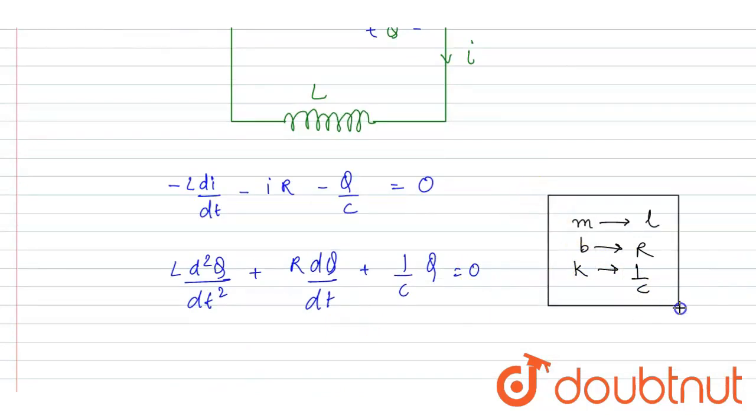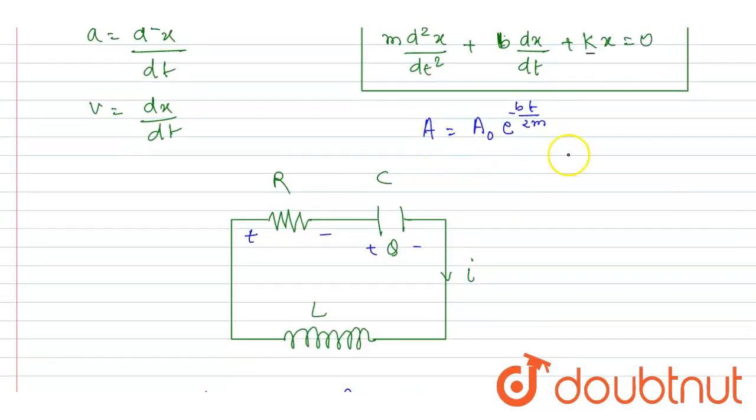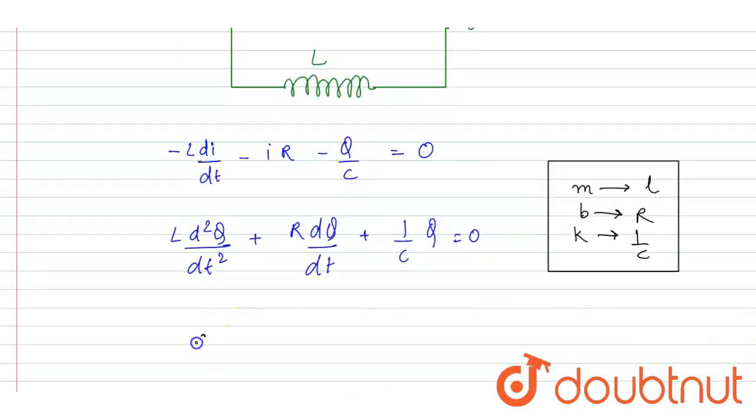Now if you see the amplitude, amplitude is A0 e to the power minus B by 2M into T. So I will write Q equals Q0, the maximum charge given in the question. B is to be replaced by R.